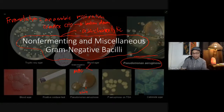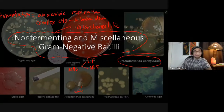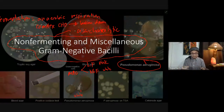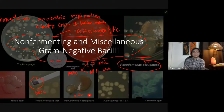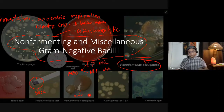In MacConkey Agar you can differentiate whether organisms are lactose fermenters or non-lactose fermenters. Lactose fermenters produce pink colonies, while non-lactose fermenters produce white colonies. Most non-fermenters are also oxidase positive, characterized by a black color on filter paper after adding the oxidase reagent. Their common denominator is that they cannot ferment any sugar at all.